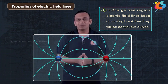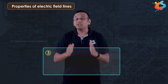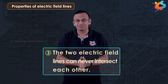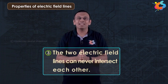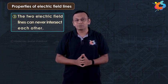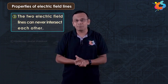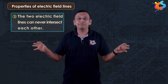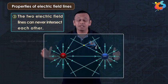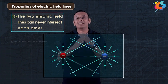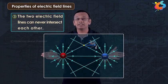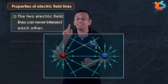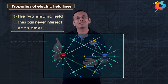The third property is that two electric field lines can never intersect each other. This is consistent with what we explained for the electric dipole — the individual field lines of the two charges do not intersect. Rather, the electric field lines should be drawn so that they represent the net electric field.